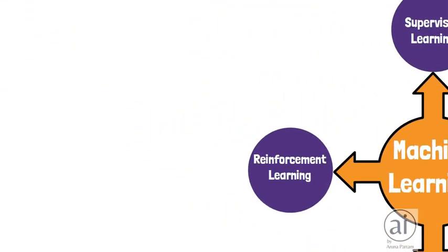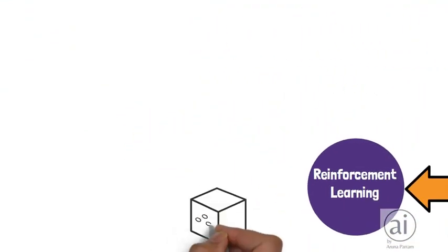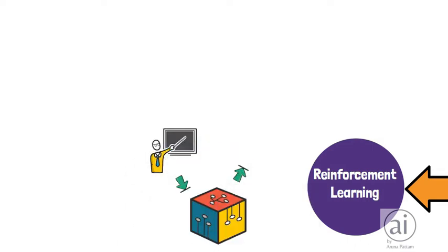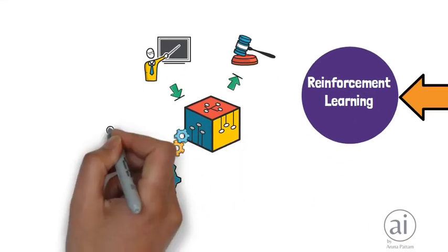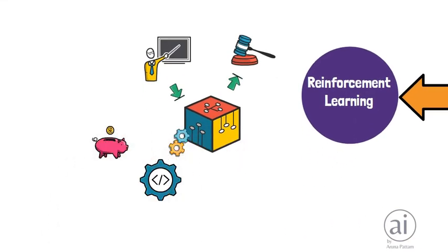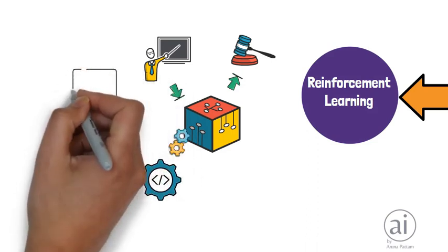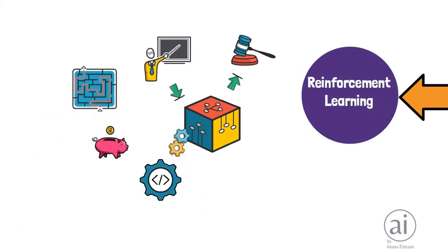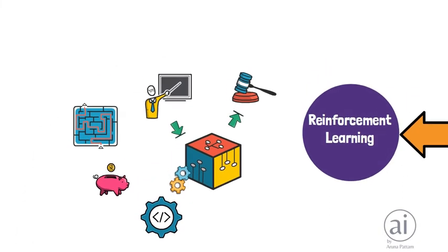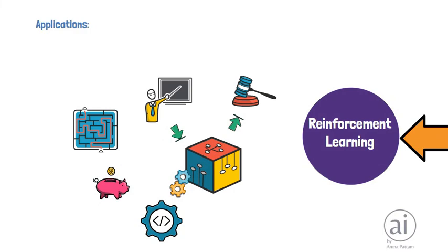Reinforcement learning is enforcing models to learn how to make decisions. In this method, we train the machine using reward feedback to learn from its experience and find the best possible behavior or path it should take in a specific situation. This method is very helpful in self-driving cars and personalized chatbot responses.